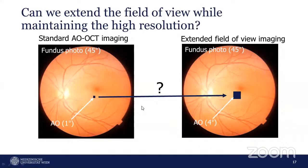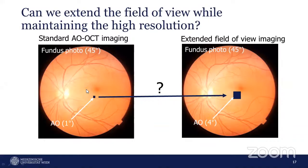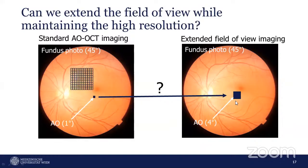The key question is: can we extend the field of view while maintaining high resolution? A fundus image at 45 degrees field of view compared to one by one degree and four by four degree fields of view shows why wider field of view is clinically important. A larger field of view makes it easier for ophthalmologists to diagnose disease. For example, imaging a 12 by 12 degree area requires 120 measurements with a one-degree field of view, but only 9 measurements with a four-degree field of view.